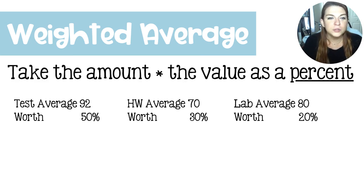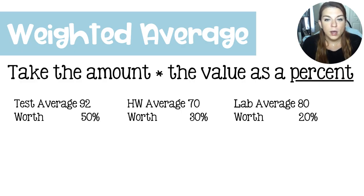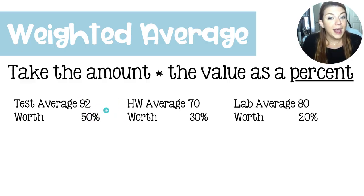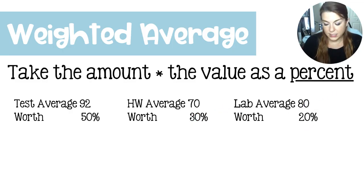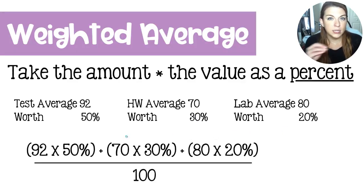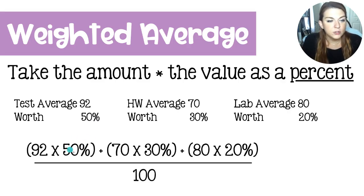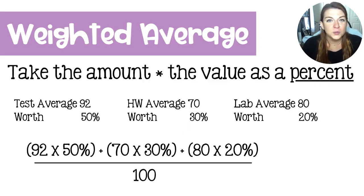For the weighted average, you take each component and multiply it by its percentage value in the population. Take the test average of 92 and multiply by 50, add that to 70 times 30, then add that to 80 times 20. I recommend converting each percent to a decimal first — so 50% becomes 0.5, 30% becomes 0.3 — by moving the decimal two places, you've effectively divided by 100 and don't need to include that step separately.